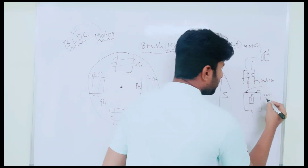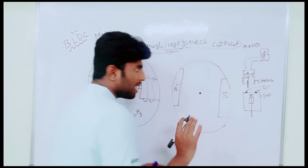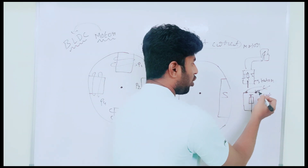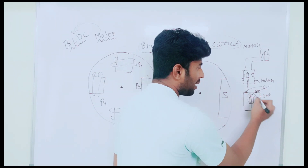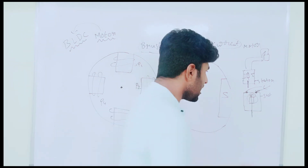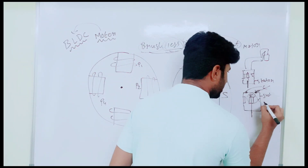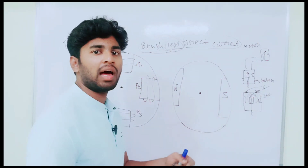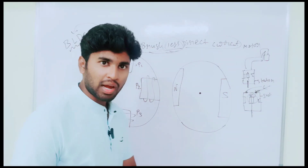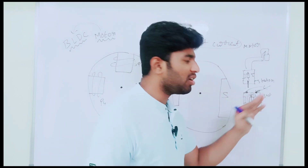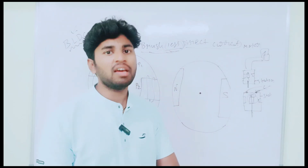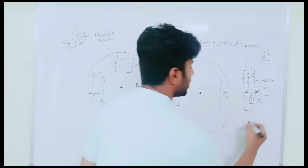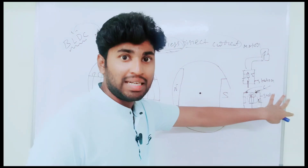Now we have a supply — the same DC supply. The current is created in the armature. In the stator, there is a magnetic flux. We have a magnetic field in the rotor. Then we have a force created. This causes the rotor to rotate. This is the normal DC motor.